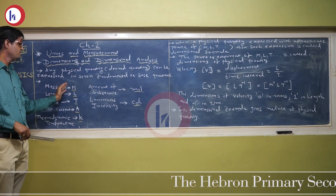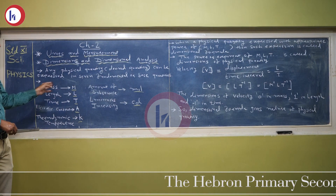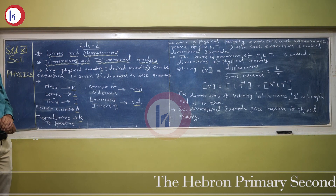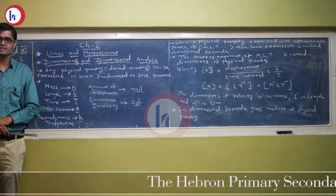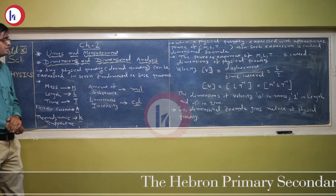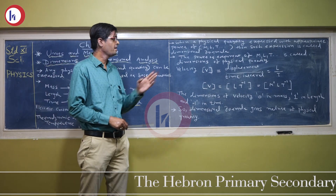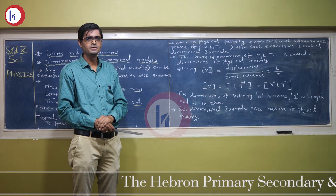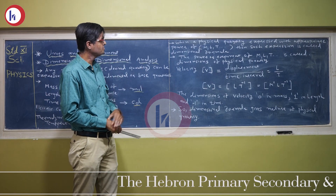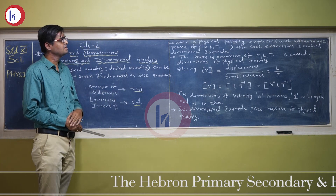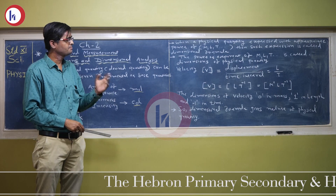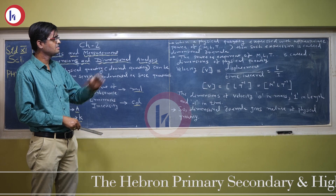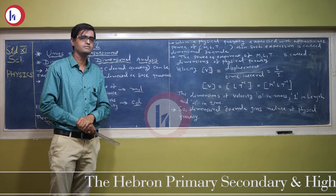So we will not write 'mass', we will write capital M; we will not write 'length', we will write capital L. Then we will do some analysis, and by this analysis we will understand the nature of the physical quantity. When any physical quantity is expressed in appropriate powers of mass, length, and time, that expression is called the dimensional formula.